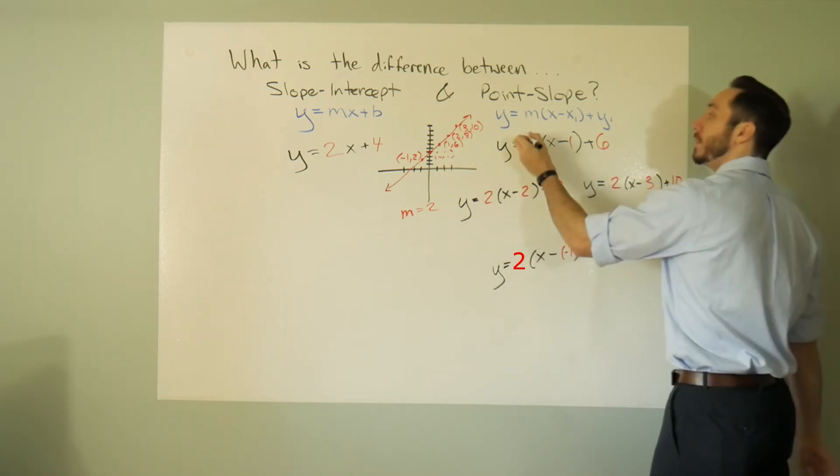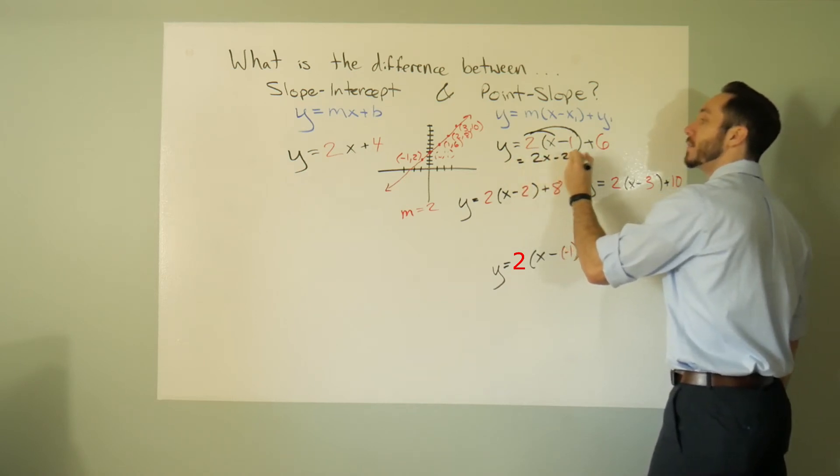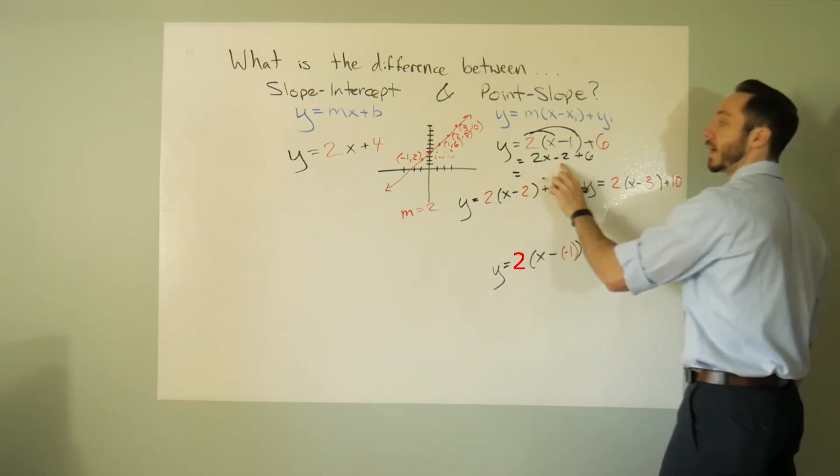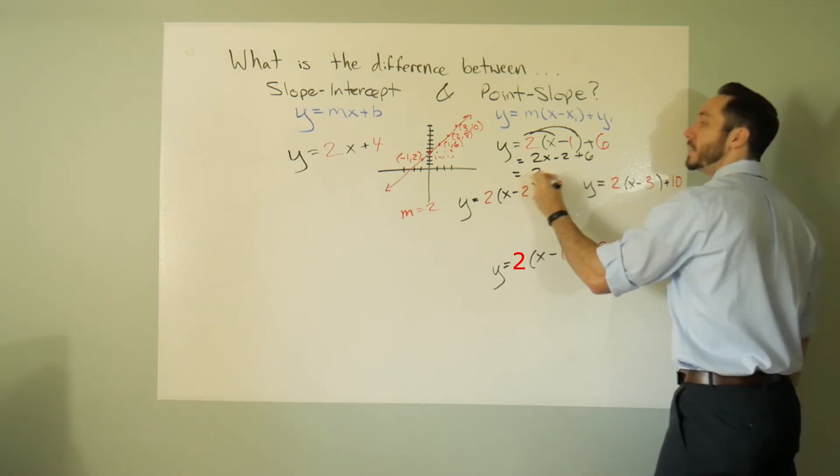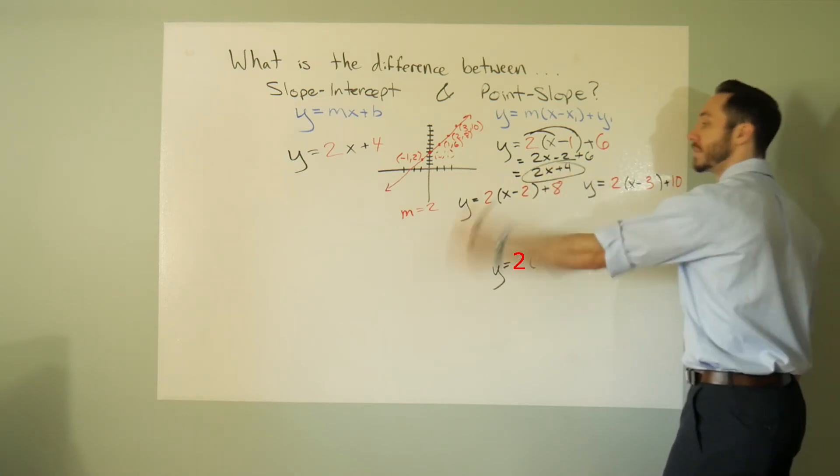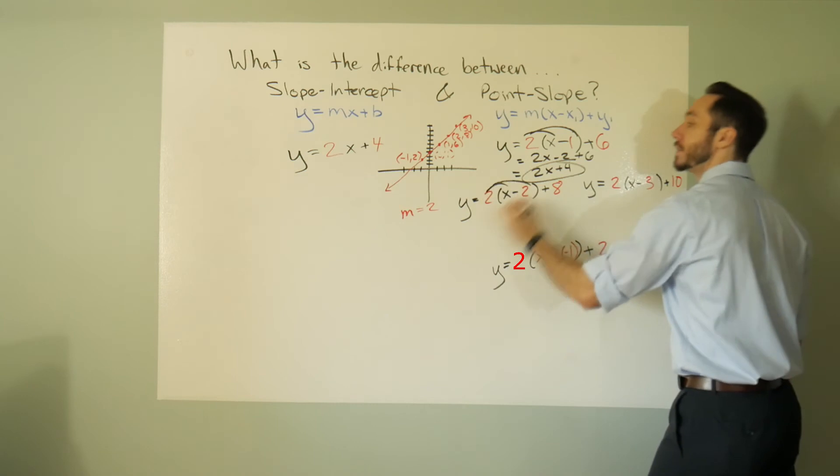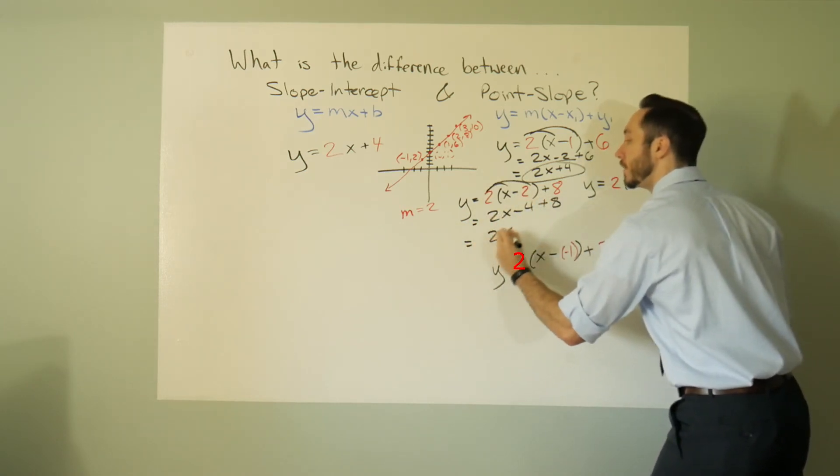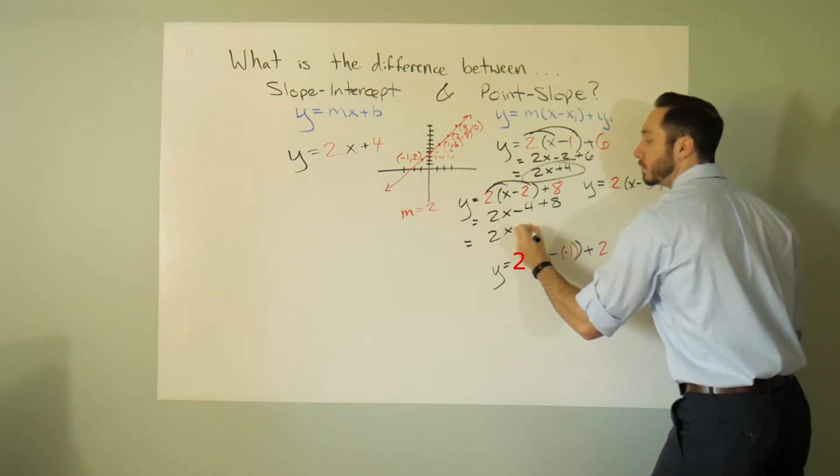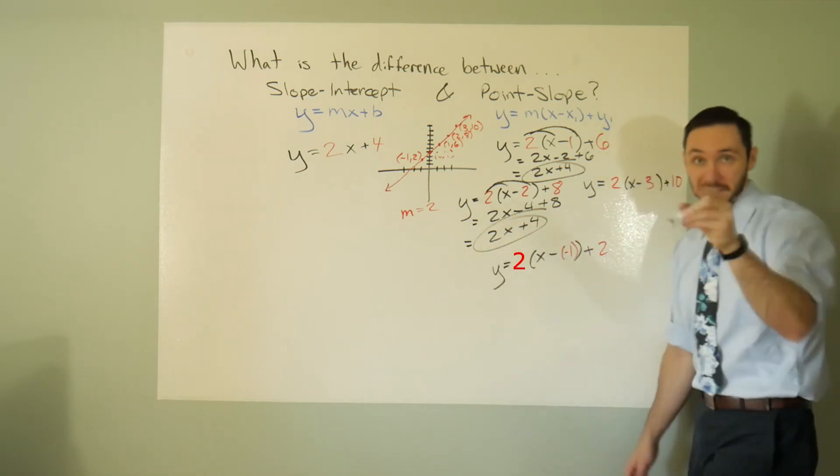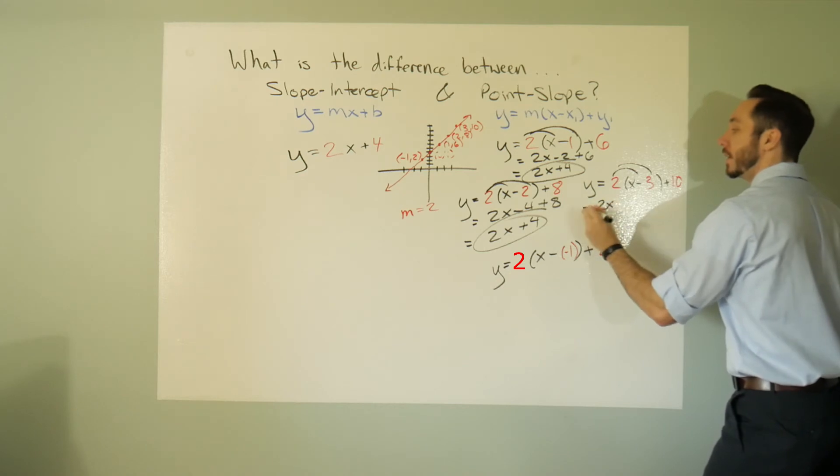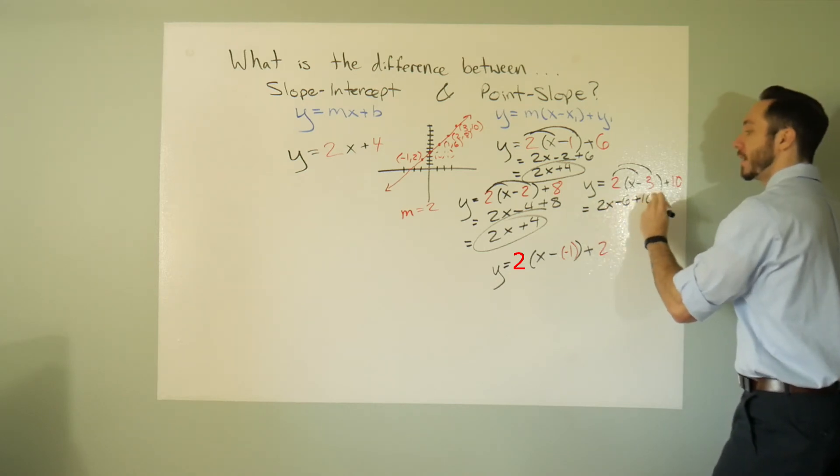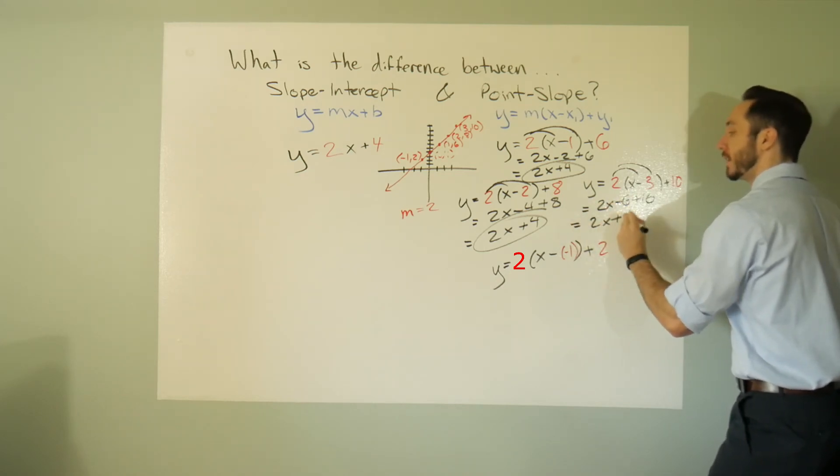If you distribute in this 2, you get 2x minus 2 plus 6. Hey, would you look at that: negative 2 plus 6, that's 2x plus 4. Same thing. Distribute in this 2: 2x minus 4 plus 8, that's 2x plus 4.